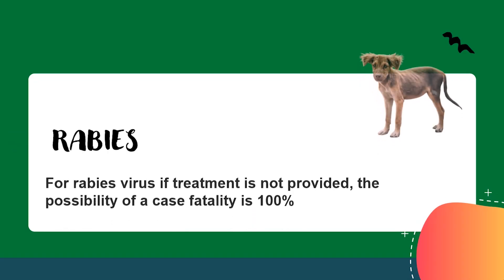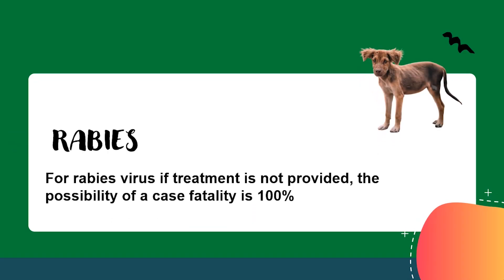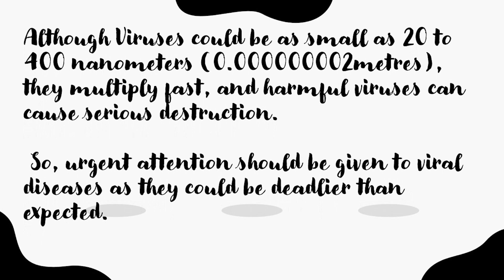Rabies: For rabies virus, if treatment is not provided, the possibility of a case fatality is 100%. Although viruses could be as small as 20 to 400 nanometers, they multiply fast, and harmful viruses can cause serious destruction. Urgent attention should be given to viral diseases as they could be deadlier than expected.